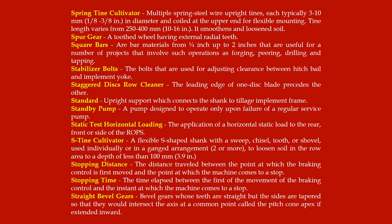Static test horizontal loading: the application of a horizontal static load to the rear, front, or side of the ROPS. S-tine cultivator: a flexible S-shaped shank with a sweep, chisel tooth, or shovel used individually or in a ganged arrangement to loosen soil in the row area to a depth of less than 100 mm (3.9 inches).